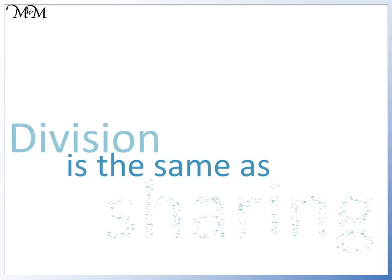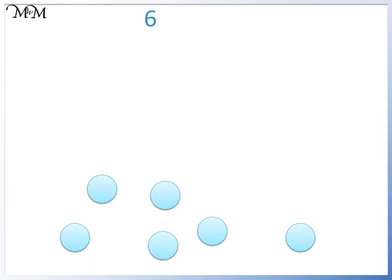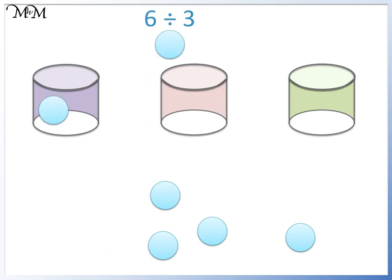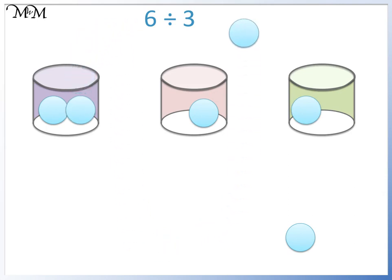Division is the same as sharing. For example, here we have six counters. We are going to share them equally amongst three people — we are going to divide them by three. We want to make sure that each person receives the same number of counters. We can do this by taking it in turns to place a counter in each pot. We have two counters in each pot, so six counters shared amongst three people equals two counters each. Six divided by three equals two.